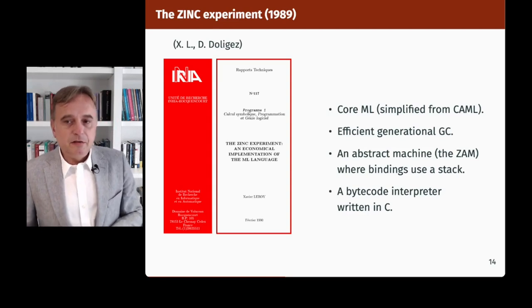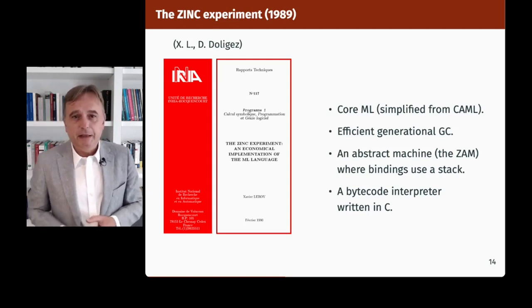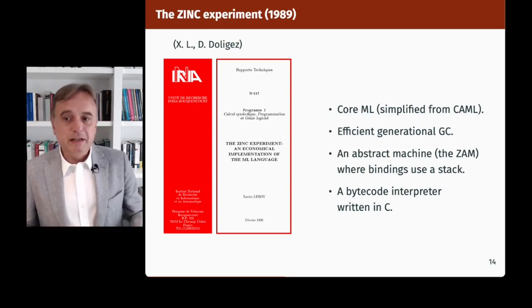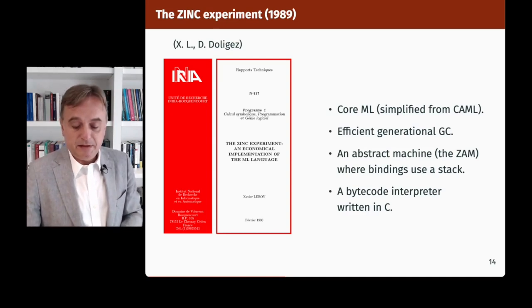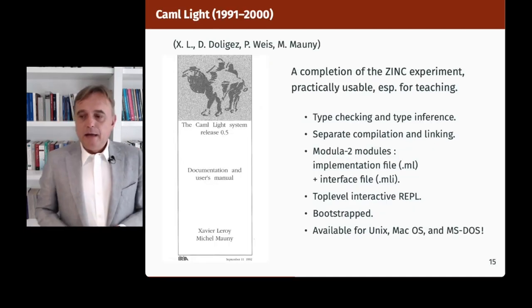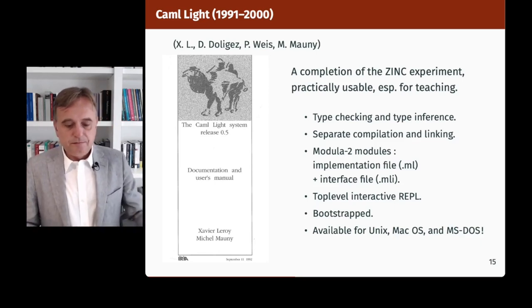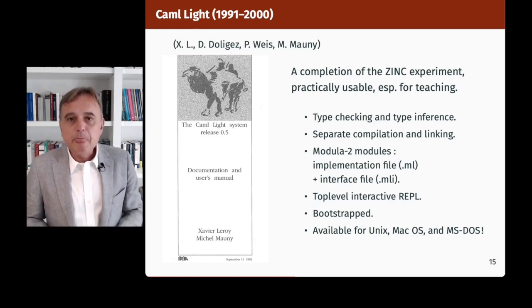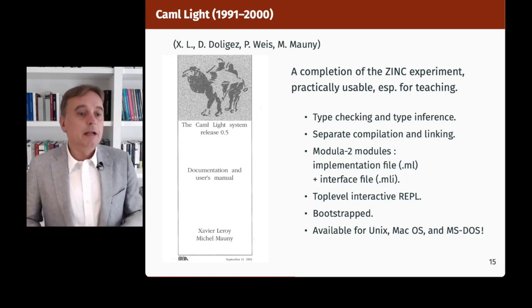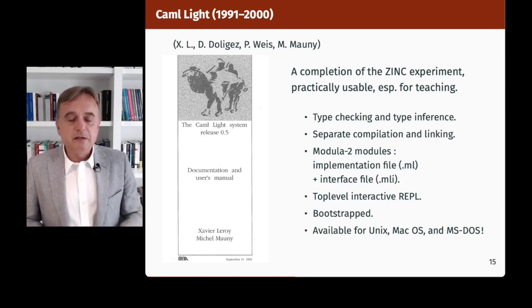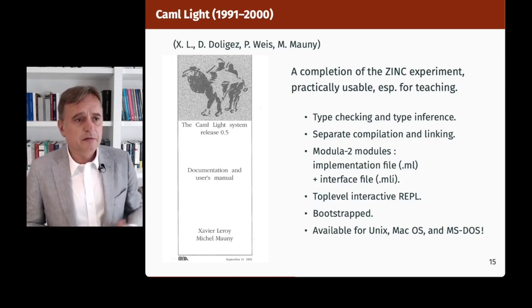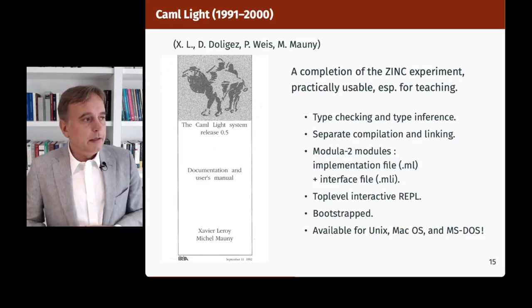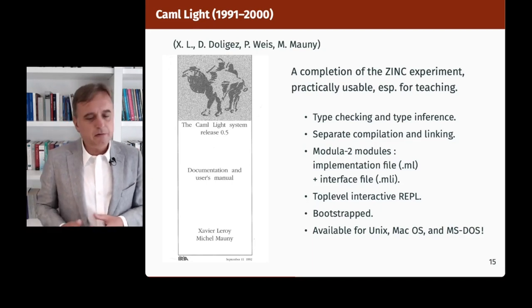The ZAM could be explained in terms of the calculus of explicit substitutions — the Lambda-Sigma calculus that Pierre-Louis Curien and others were working on at that time. Since time was short and we didn't know how to write native code compilers, we did a bytecode interpreter written in C. The results were pretty interesting performance-wise: we were competitive with Camel despite the bytecode interpreter overhead. Then the project was put on the back burner while I started my PhD on a different topic, and came back to life in 1991.